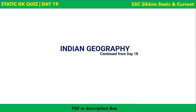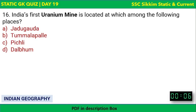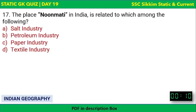Now we move to Indian Geography. First question: India's first uranium mine is located at which place? The correct answer is Jadugoda, which is in Jharkhand.